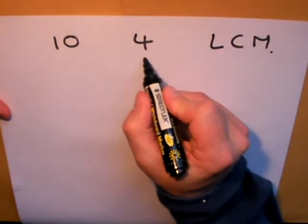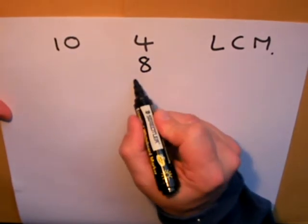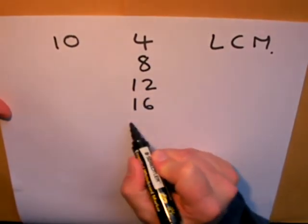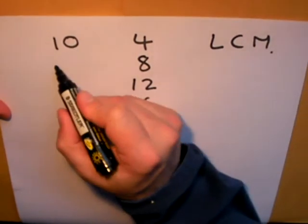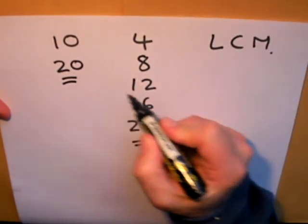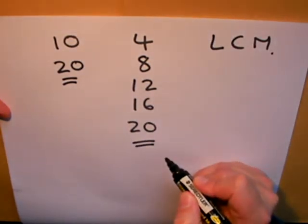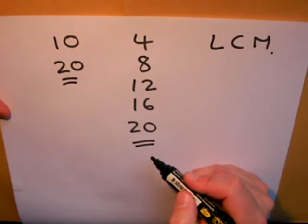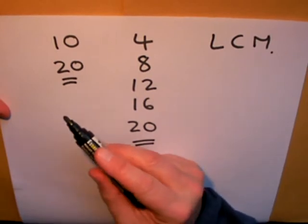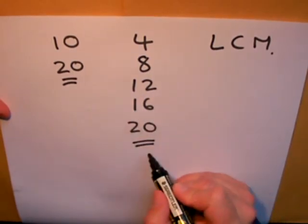If we start writing down the 4 times table: 4, 8, 12, 16, 20, and so on, you'll notice that 40 isn't the lowest common multiple. We actually find a number that's lower, in this case 20. So the lowest common multiple of 10 and 4 is 20.